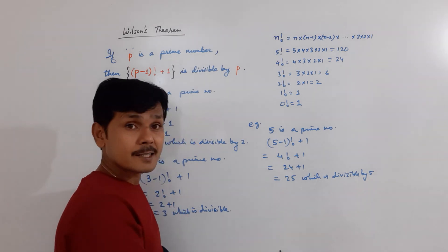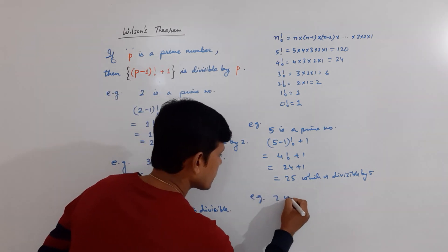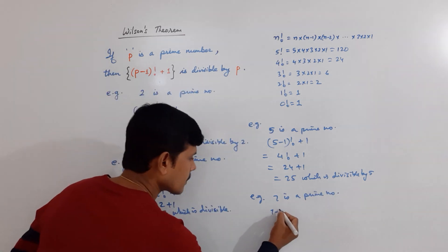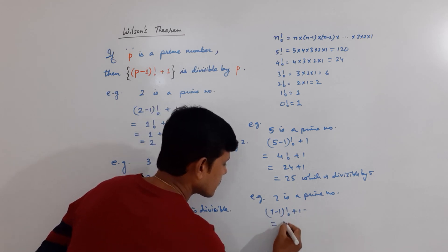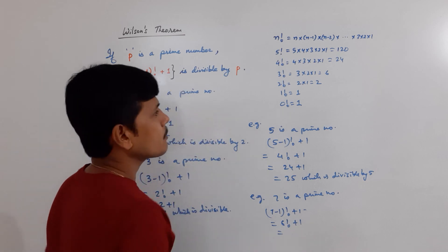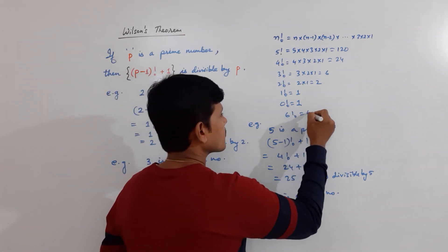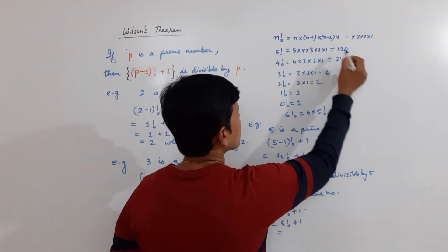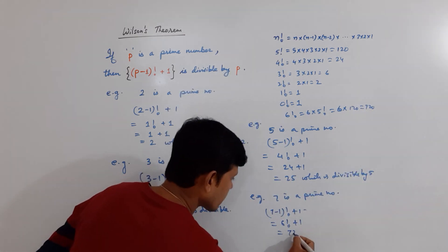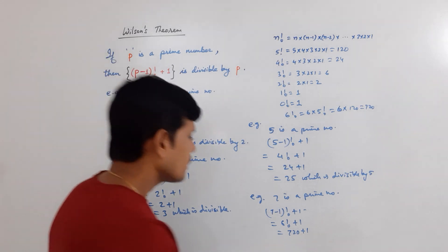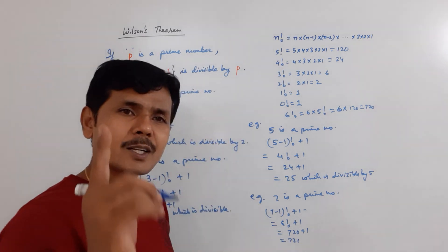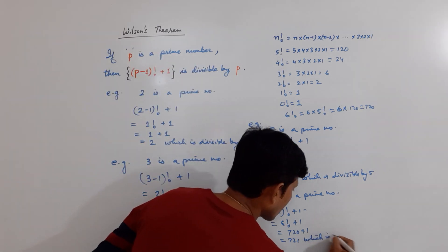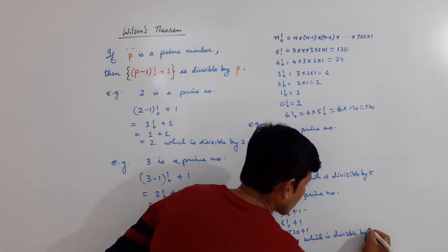Similarly, if I take for 7, 7 is the prime number. Now, 7 minus 1 factorial plus 1. What I will get? It is 6 factorial plus 1. 6 factorial means, let us go to 6 factorial. 6 factorial means 6 into 5. Can I write like 5 factorial? Yes. And 5 factorial is 120, which is equal to 720. So, I am writing 720 plus 1. And 720 plus 1 means 721. And 721 is divisible by 7, which is divisible by 7.